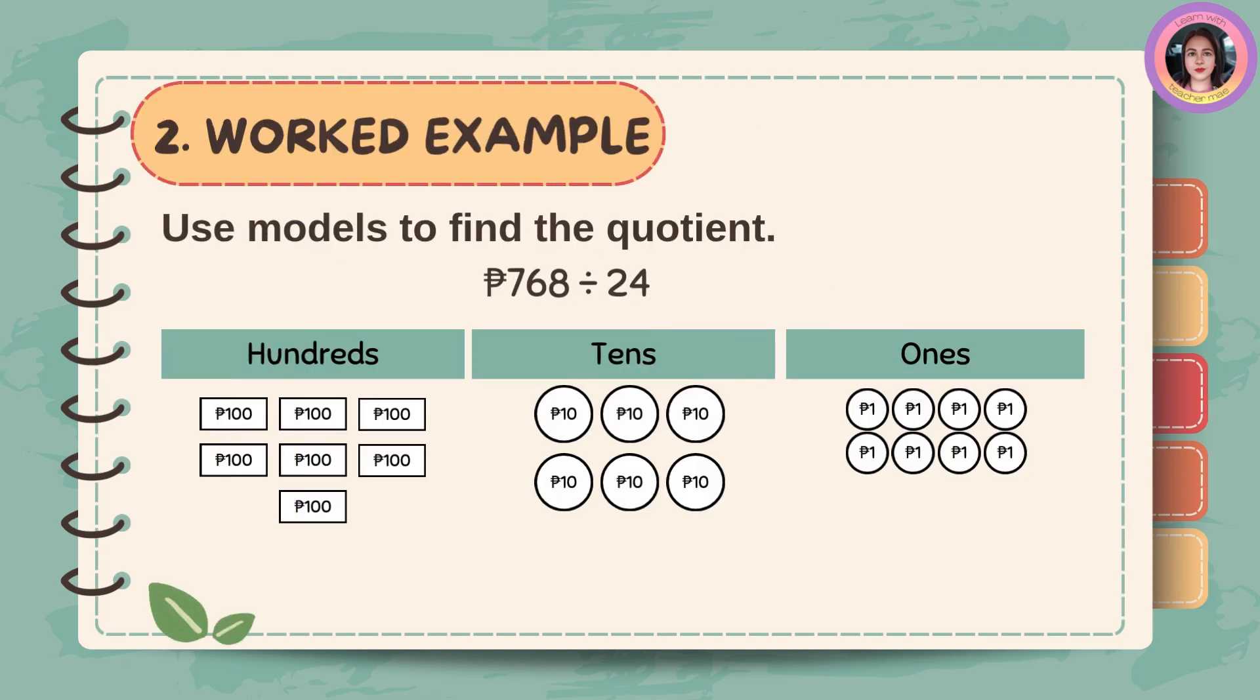Use models to find the quotient. 768 pesos divided by 24. In 768 pesos, there are 7 hundreds, 6 tenths, and 8 ones.